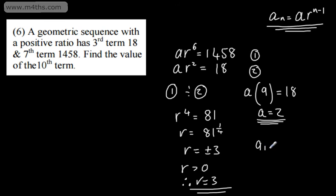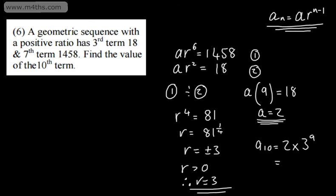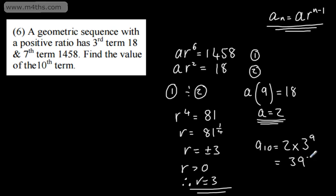We want the 10th term, a10, which equals the first term a, multiplied by the ratio 3 to the power of 9 — that's n minus 1. So we do 2 times 3 to the power of 9, which gives us 39,366. Often the question will ask you to find the first and tenth term, for example. I would prefer you didn't just keep multiplying, especially if asked for the 112th term, and also that's not easy if the ratio is messy.